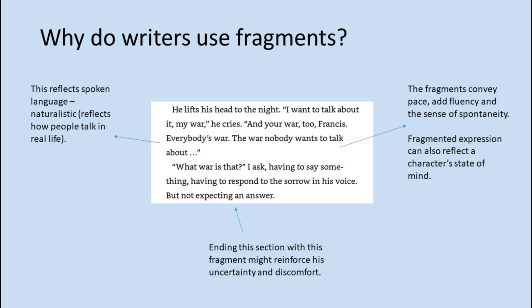Further into the chapter and into the conversation between the two of them: 'He lifts his head to the night. I want to talk about it. My war, he cries. And your war too, Francis. Everybody's war. The war nobody wants to talk about.' The first fragment there is 'Everybody's war' — it makes perfect sense in context, but as a sentence on its own it isn't complete. That reflects spoken language; it's naturalistic, it reflects how people talk in real life. If you listen to a conversation, people won't always talk in full sentences but it'll make sense because of how those utterances fit together.